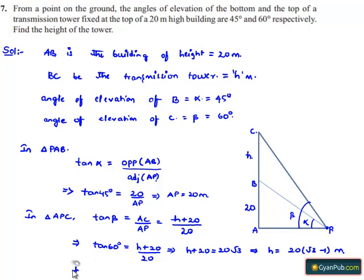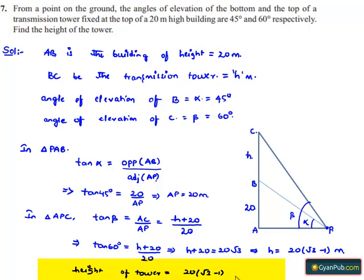Therefore, the height of the transmission tower placed on the 20 meter tall building is 20 into root 3 minus 1 meters.